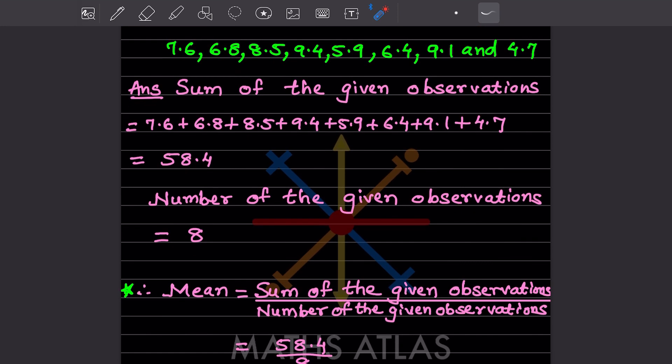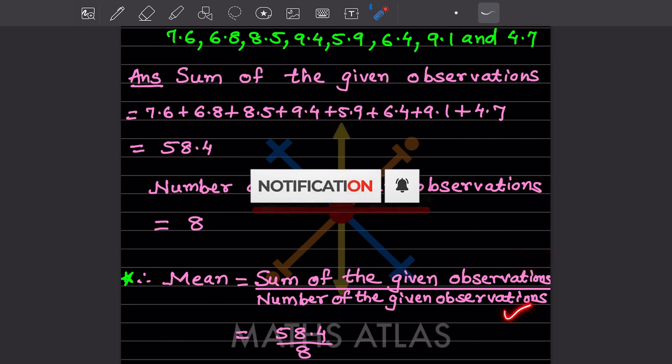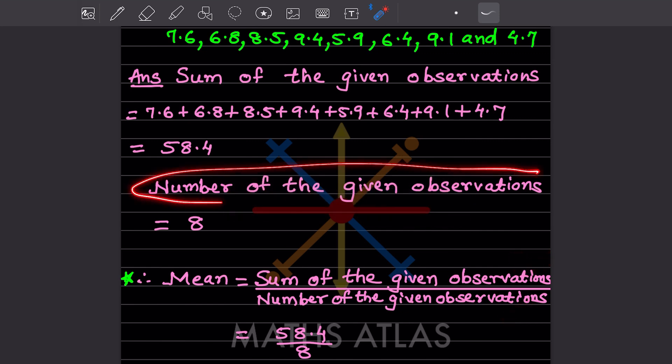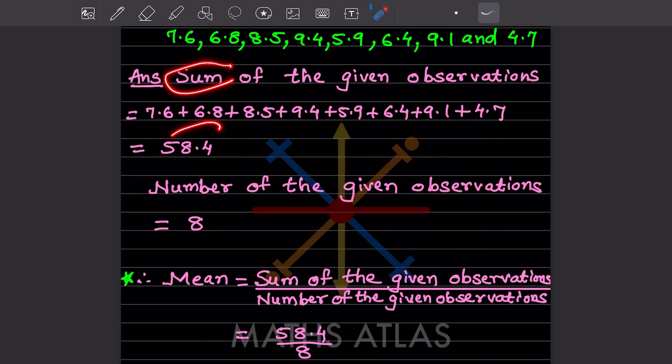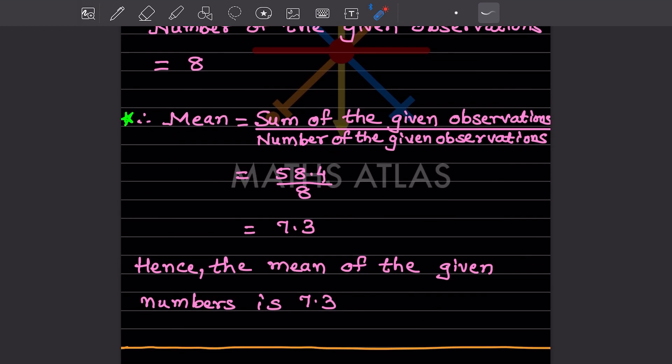For finding the mean, this is the formula. Just note down this formula. Mean is sum of the given observations divided by number of the given observations. The number of observations is 8, and the sum is 58.4 divided by 8. When you divide, you get 7.3. Hence, the mean of the given numbers is 7.3.